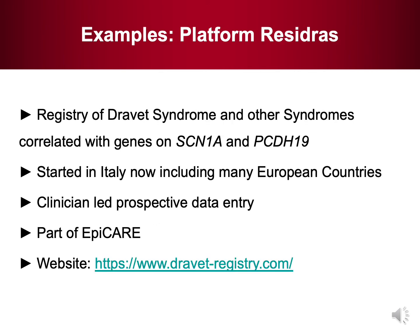The next example of a registry is the platform Residrus. This is a registry of Dravet syndrome and other syndromes correlated with genes on SCN1A and PCDH19. This started a while back in Italy and now includes many European countries. This is a clinician-led prospective data entry platform and is also part of the EpiCare framework of European countries.